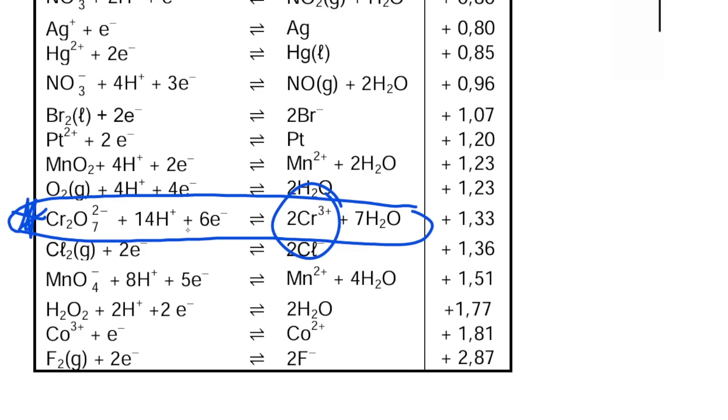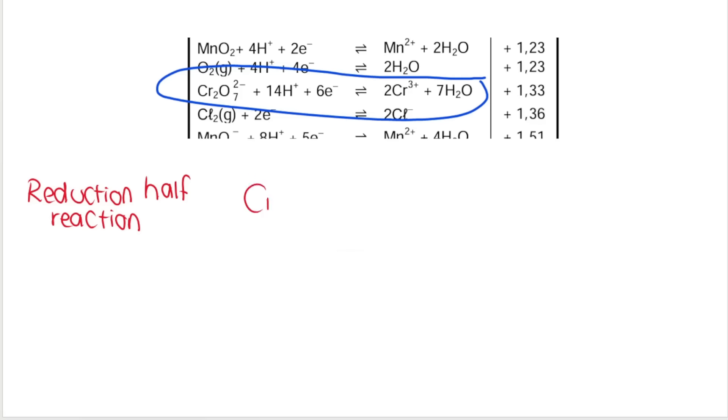So my question wanted me to find the reduction half reaction. So basically, it's not the one that I just found. The next one would be my reduction half reaction. The one that's lower down. This one. This is my reduction half reaction. And we always write that down from left to right. So we write it down as it appears on the page. Cr₂O₇²⁻ plus 14H⁺ plus 6e⁻. Just a single arrow pointing to the right. Not a double arrow. 2Cr³⁺ plus 7H₂O.